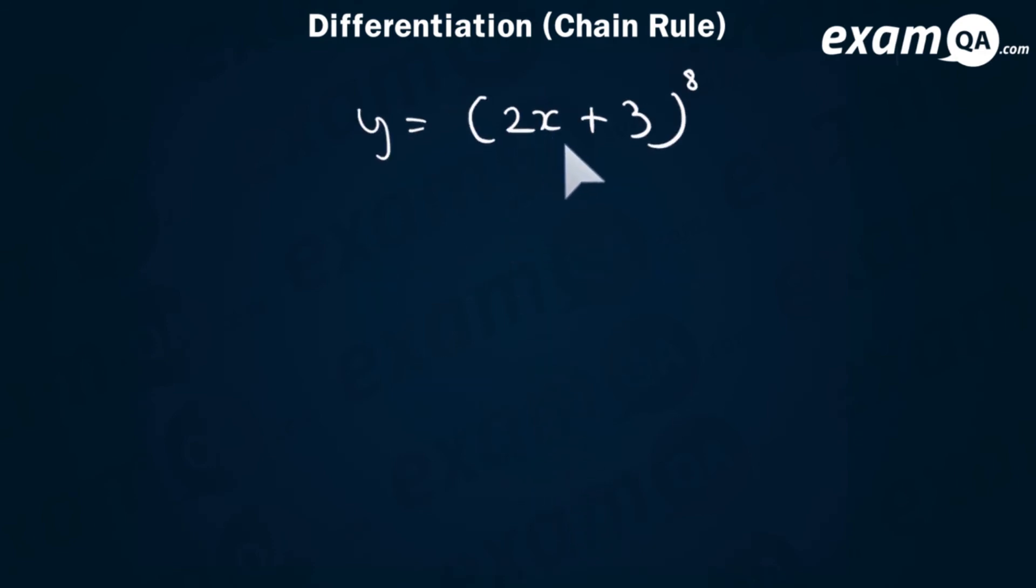Okay, this one's slightly different. Now we're going to make 2x plus 3 become u. And it's going to make it a little bit easier to solve. And of course, we'll differentiate it now. And we can fill in the chain rule.